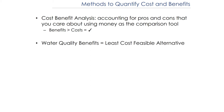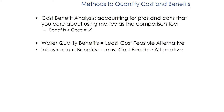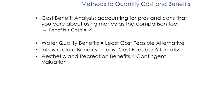The first objective was water quality benefits, using an approach called the least-cost feasible alternative. The second was infrastructure benefits, using the same approach. The third was aesthetics and recreation benefits — one of those hard-to-quantify objectives — where we used an economic approach called contingent valuation to get the willingness to pay.